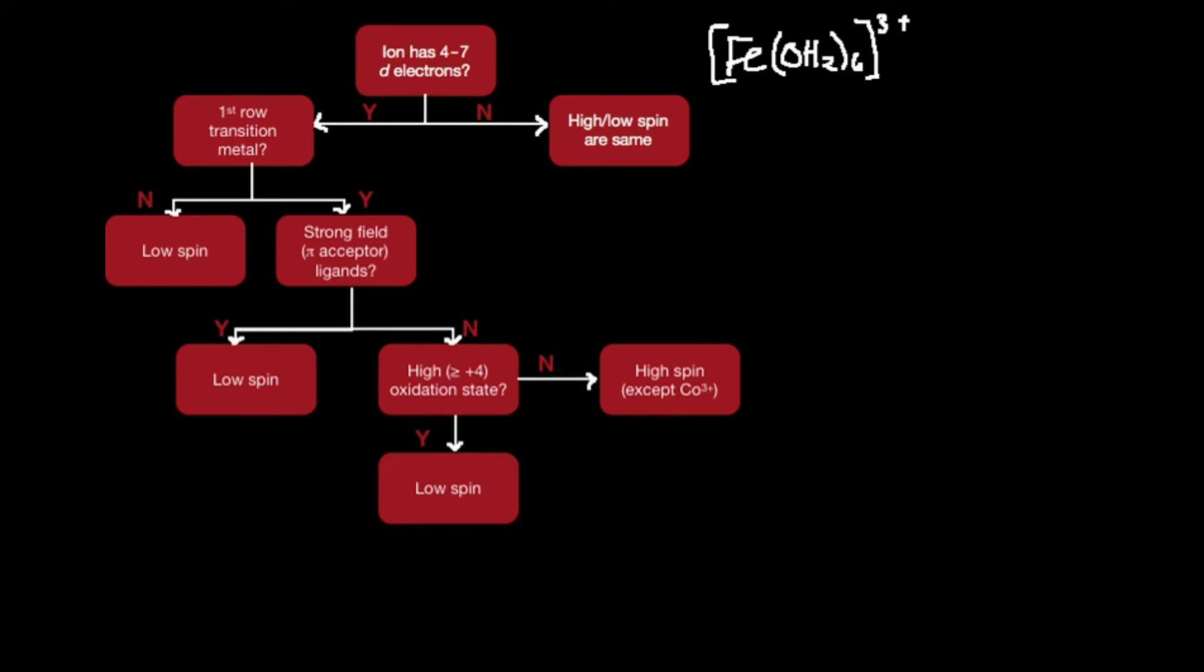Alright, so the first thing we need to do is figure out the charge on iron. The way I like to do this is you look at the charge of the overall complex, which is positive three, and the overall charge of the complex has to equal the sum of the individual charges. So the charge of water is zero, and then we multiply by the number of water. So zero times six, and then you have to add on the charge from iron. Well clearly you can see this is zero, so we can see that this is actually iron three. So iron is going to have a plus three charge, so we can write that as iron three plus. Now that's the first step in all of this.